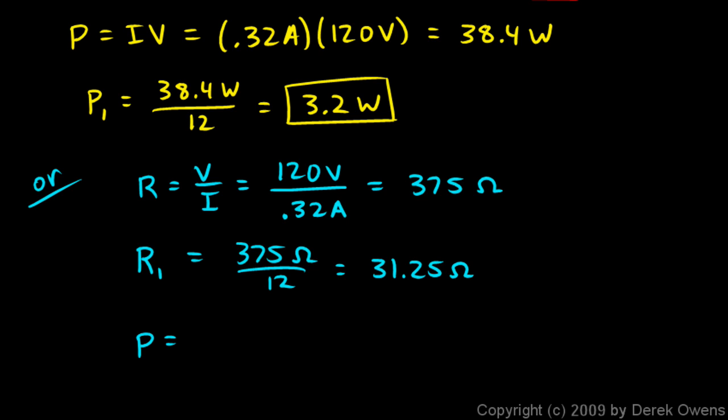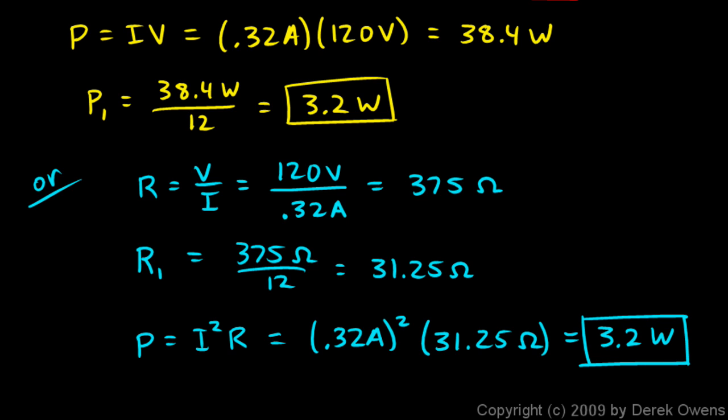Now we can find the power for one bulb. We know this formula: P is I squared R. If we apply this concept to just a single bulb, we're going to put in the current for that bulb and the resistance for that bulb, and we'll get the power for that bulb. The current is 0.32 amps, so this is 0.32 amps squared times the resistance. We put in the resistance of one bulb, 31.25 ohms, and when you do that calculation it comes out to 3.2 watts.